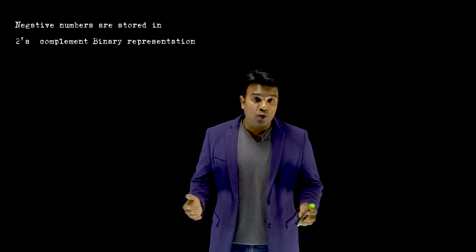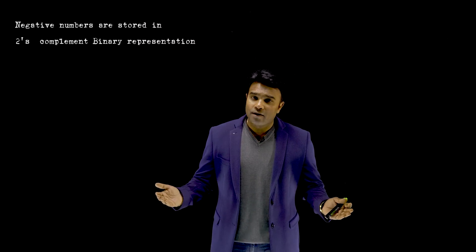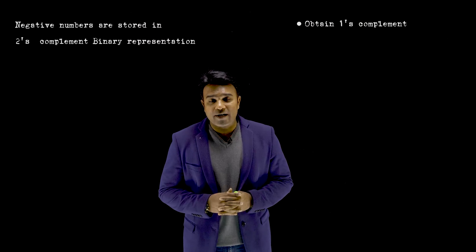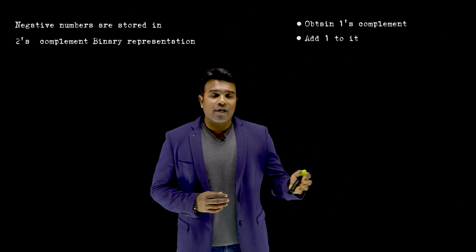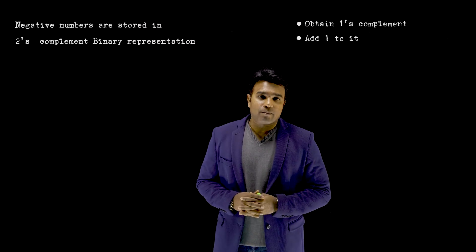What we understand through this discussion is that negative numbers are internally stored in the 2's complement binary representation format. To obtain the 2's complement binary representation, first we need to obtain the 1's complement, and then add a 1 to get the 2's complement, which represents the negative number.